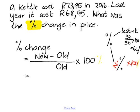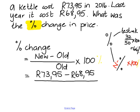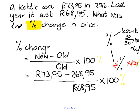The latest price of the kettle is $73.95. The old price is $68.95. I write the old price underneath so you remember. So we have: 73.95 minus 68.95 over 68.95, times by a hundred percent. Remember, the percent is written in yellow because it is not part of your calculation.